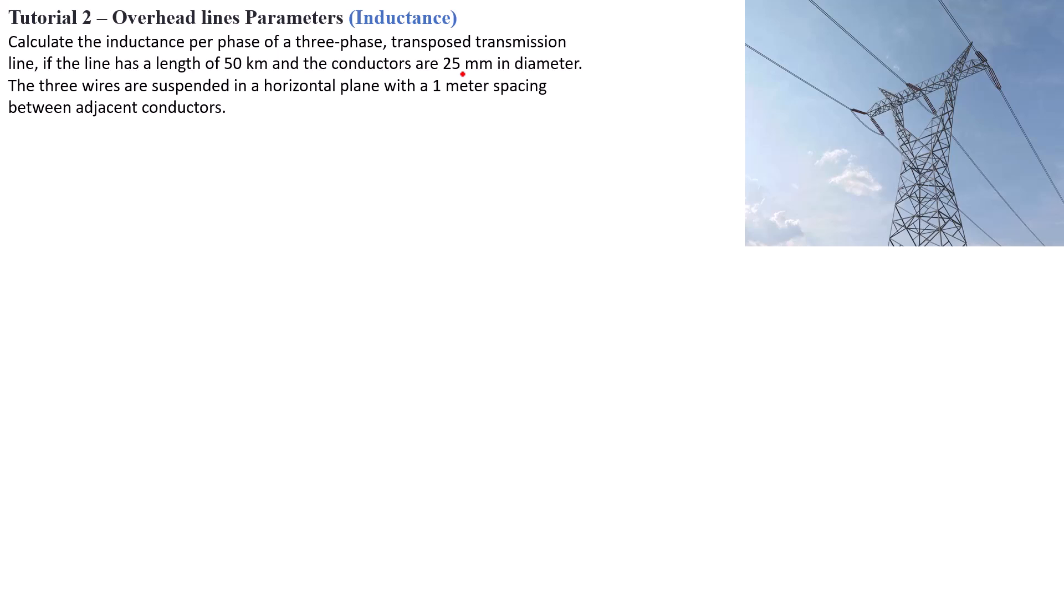The scenario is very simple. We have a three-phase transmission line that is 50 kilometers long with conductors that are 25 millimeters in diameter. The conductors are suspended in a horizontal plane with 1 meter spacing. Before you can actually start solving the problem, you need to visualize your problem statement.